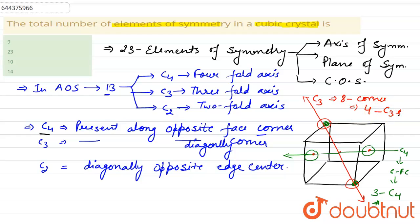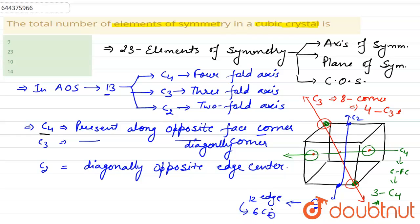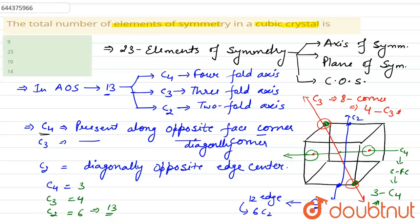Now let's see C2, which is present along the diagonally opposite edge centers. There are 12 edges, so there will be 6 C2 axes. So C4 are 3, C3 are 4, and C2 are 6, giving a total of 13 axes of symmetry.